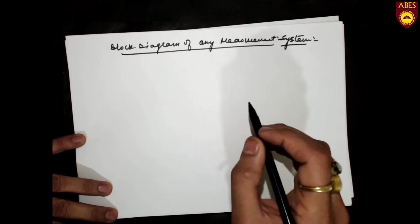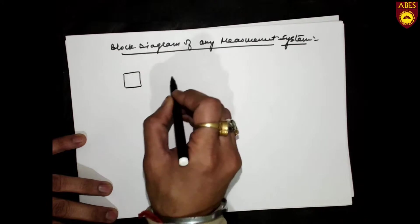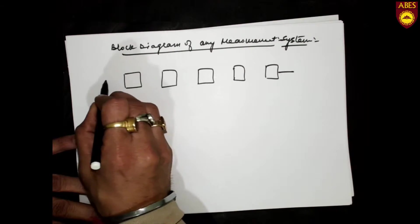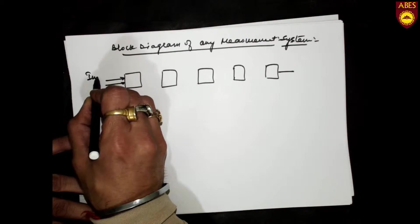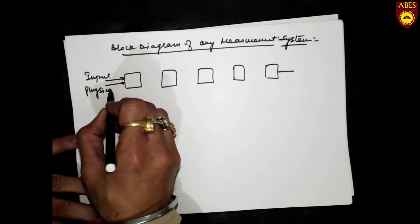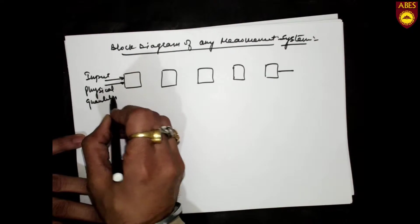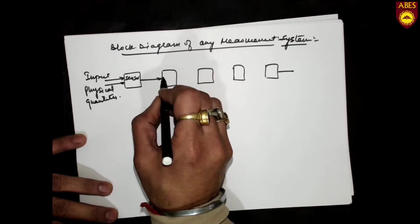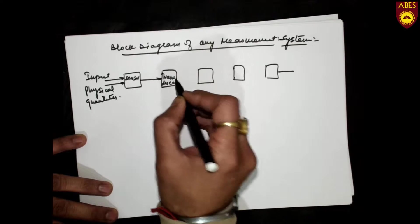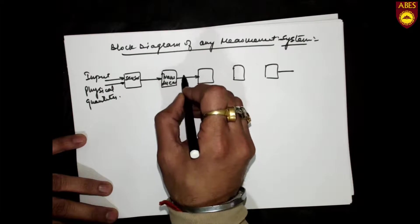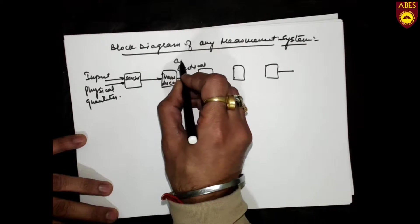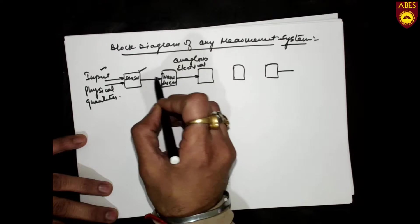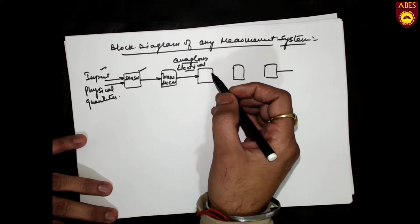The block diagram of a measurement system tells us how these particular blocks are connected in tandem to measure the physical quantity. The input is a physical quantity — which can be any of those we have already discussed — and it is sensed by a sensor. This sensor gives the signal to a transducer, which converts this physical quantity into an analogous electrical quantity, meaning it has a one-to-one correspondence with the physical quantity.